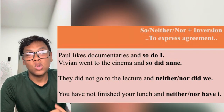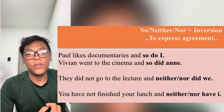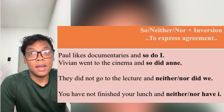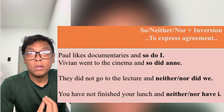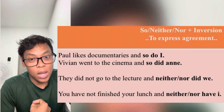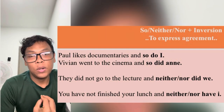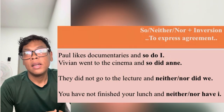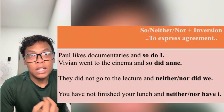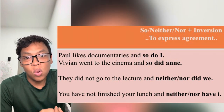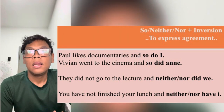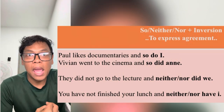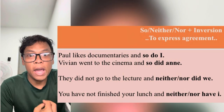For 'so/neither/nor' plus inversion, examples are: 'Paul likes documentaries, and so do I.' 'Vivian went to the cinema, and so did Anne.' 'They did not go to the lecture, and neither/nor did we.' 'You have not finished your lunch, and neither/nor have I.'